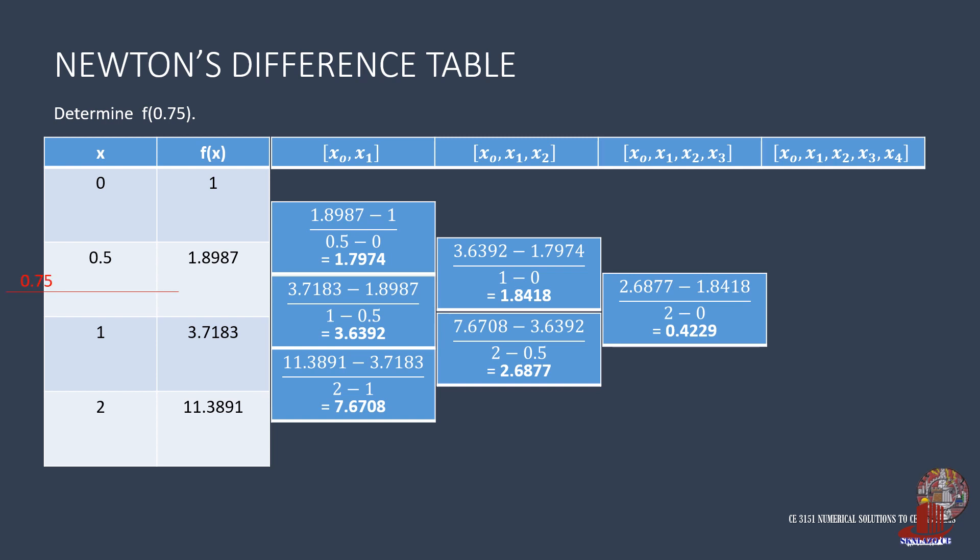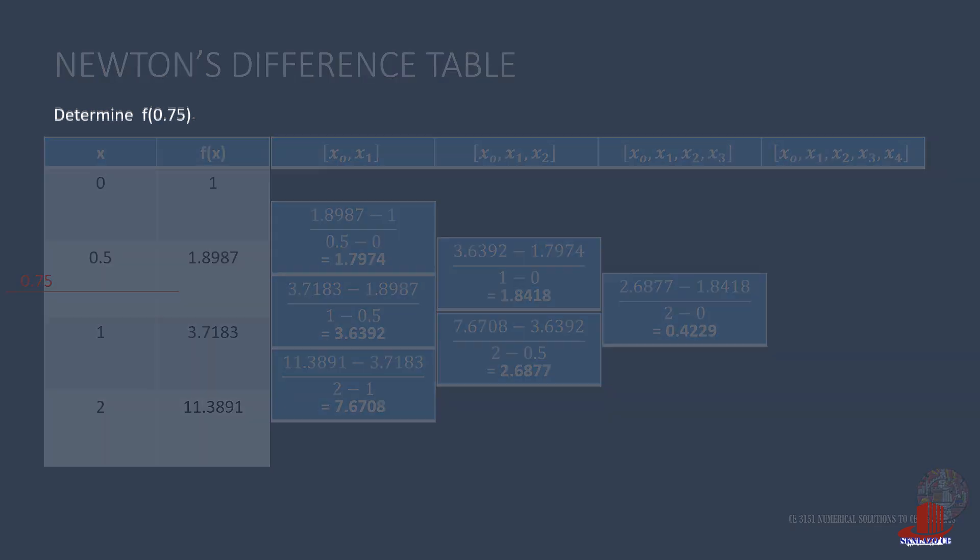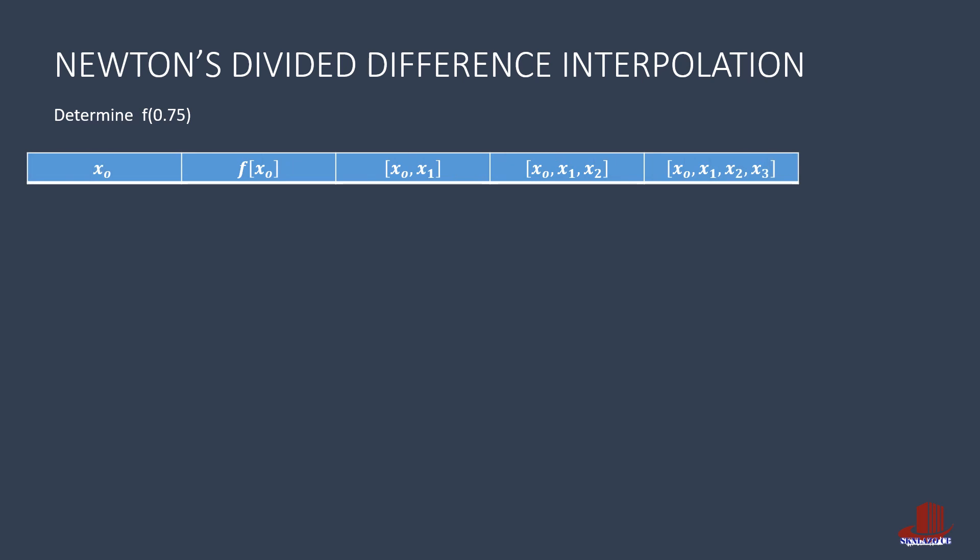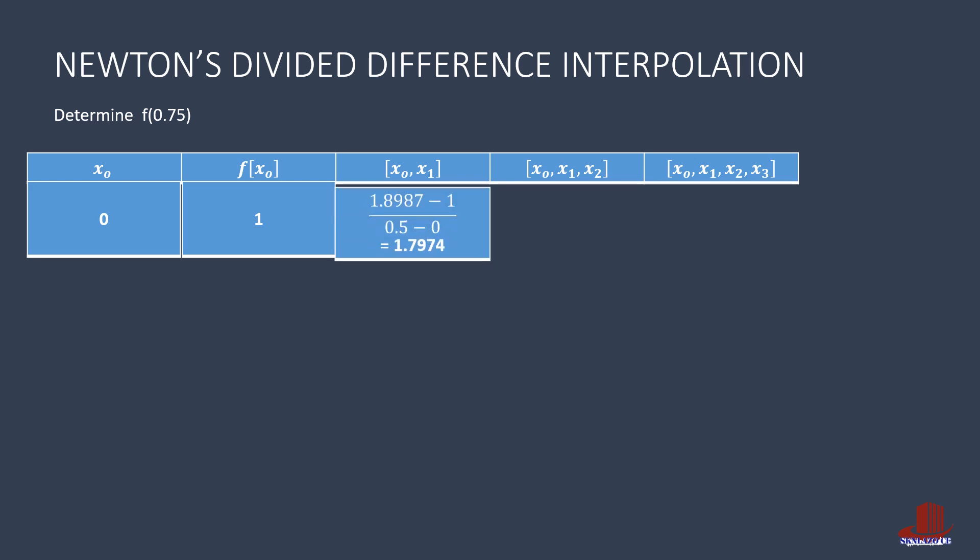We are to interpolate f of 0.75. Using Newton's divided difference interpolation, the leading coefficients are 0 for x-naught, 1 for f of x-naught, 1.7974 for the first y difference, then 1.8418, and then 0.4229.